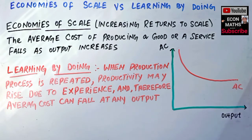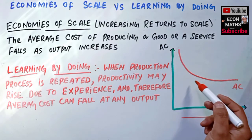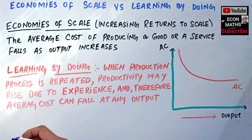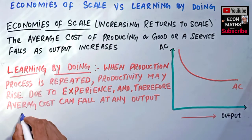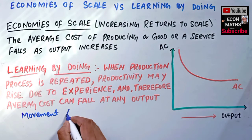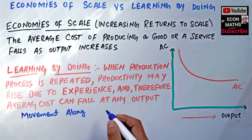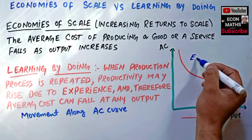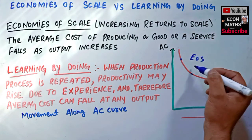By economies of scale we mean when output increases, the average cost of producing a good decreases — you can see it decreases as output increases. So economies of scale is simply a movement along the average cost curve. Moving in this direction shows us the economies of scale.